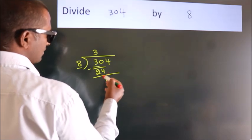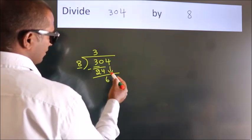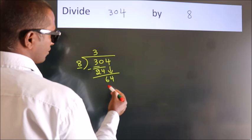After this, bring down the beside number. So, 4 down. So, 64.